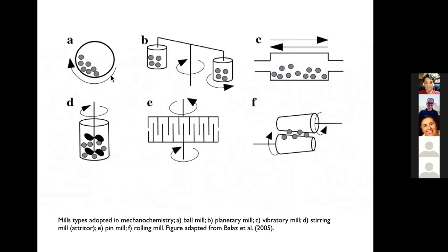El tipo de agitación horizontal, el de bolas con rotación, el planetario y el extrusor de tornillo sin fin son los principales sistemas. Uno de los problemas de estas reacciones, a diferencia de las de fase líquida, es que no puedo hacer una cromatografía para controlar el avance: coloco los reactivos, programo un tiempo, y analizo lo que tengo al final.